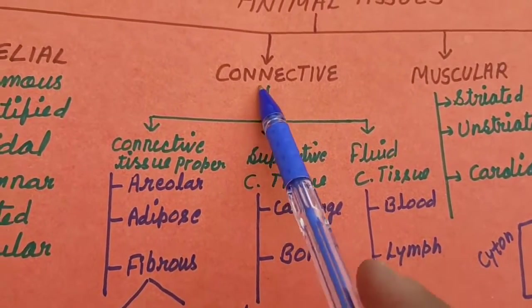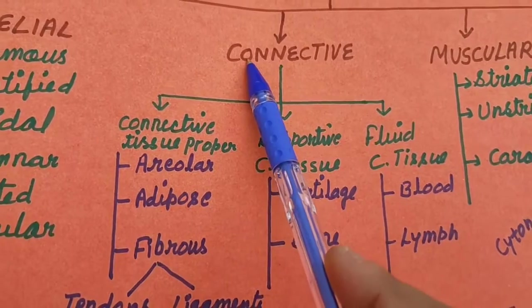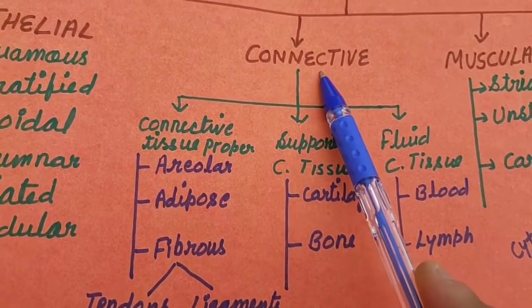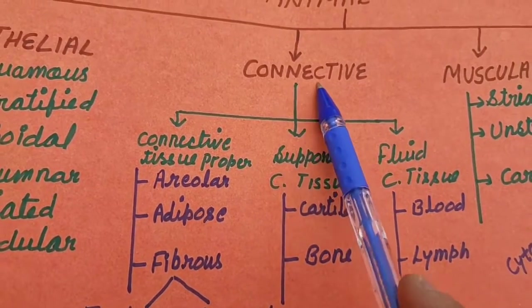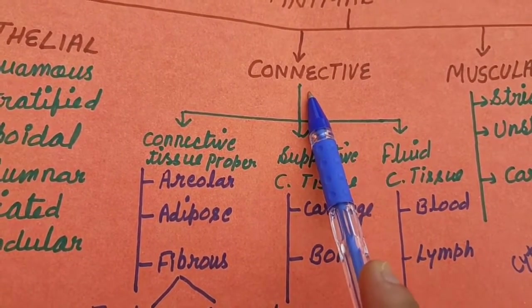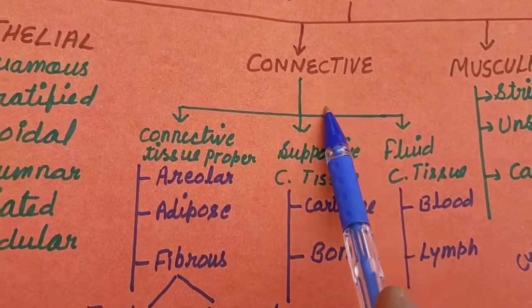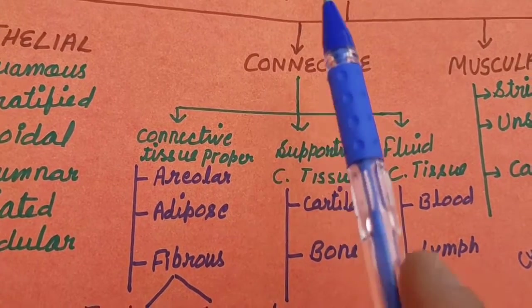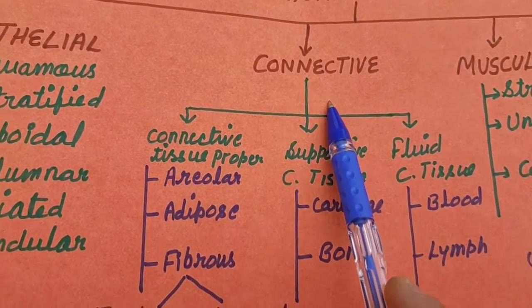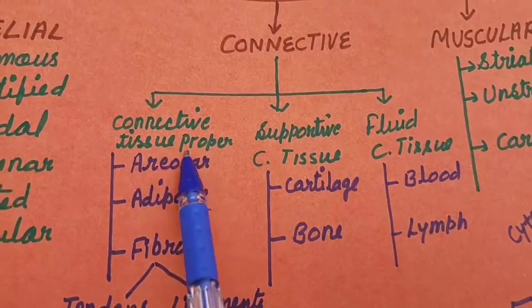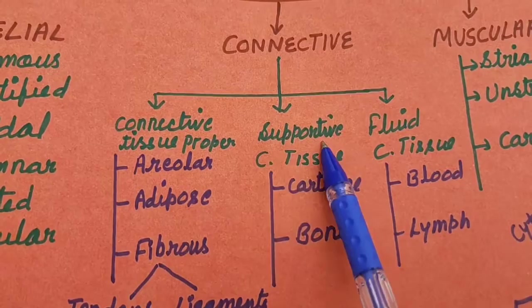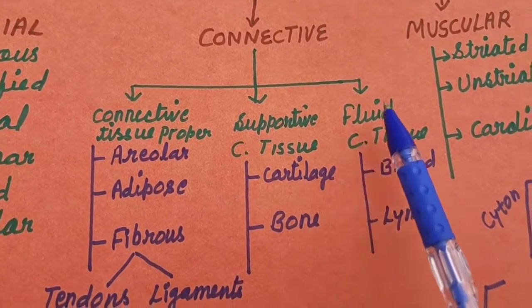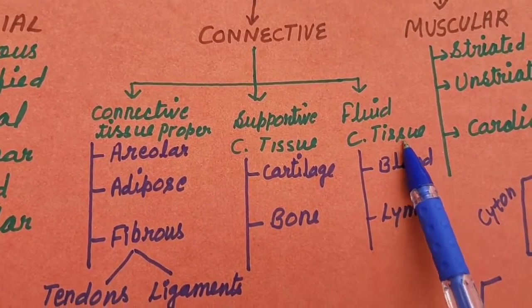Next, we talk about connective tissue. As the name is connective, connective tissue binds one tissue with another and also connect various organs and keeping them in proper place. Connective tissue is of three types: connective tissue proper, supportive connective tissue, and fluid connective tissue.